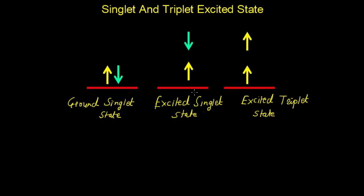In the excited singlet state the spin of one electron is plus half and the other is minus half. But in the excited triplet state the spin of one electron is plus half and the electron in the excited state also has a plus half spin.